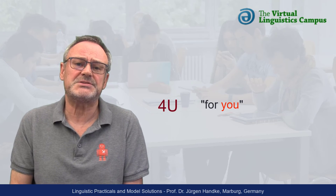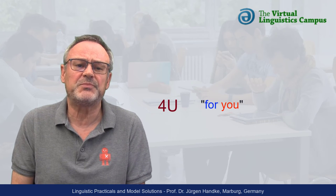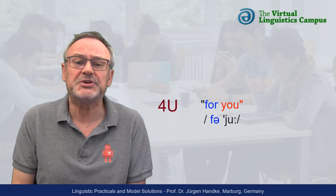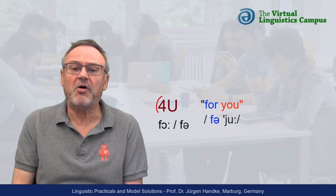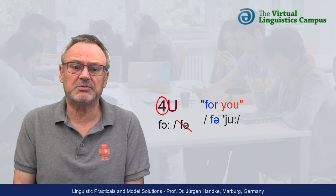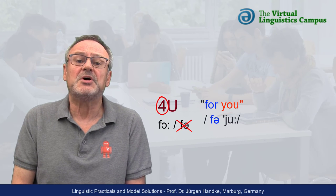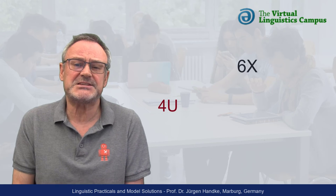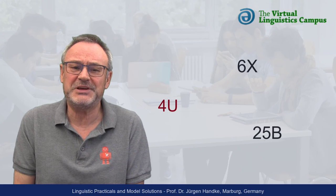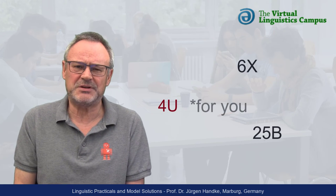This in turn means that the preposition 'for' would be unstressed and realized as a weak form — 'for you.' The number 4, however, has no weak counterpart. Thus, the item '4U' is a simple combination like '6X' or '25B,' but it does not mean 'for you.'